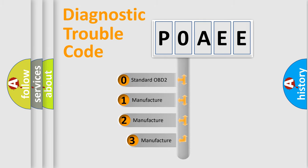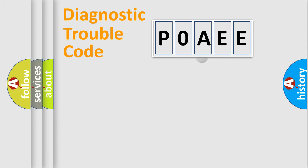If the second character is expressed as zero, it is a standardized error. In the case of numbers 1, 2, or 3, it is a more specific expression of the car-specific error.